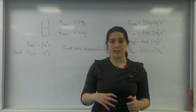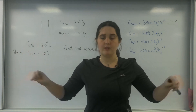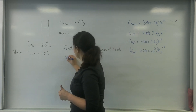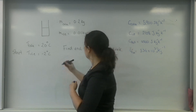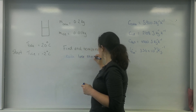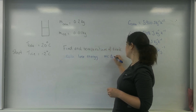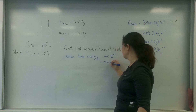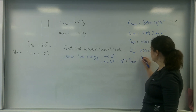The cola is going to lose energy and cool down, while the ice is going to heat up. It's really important that you keep the ice part and the cola part separate. The cola is going to lose energy but stay a liquid the whole way through, so it's going to be minus MC delta T, where the change in temperature is the end temperature minus the start.